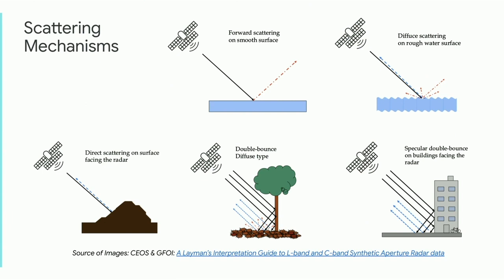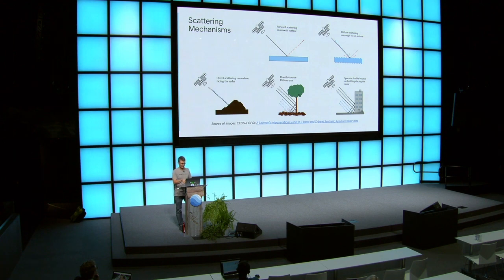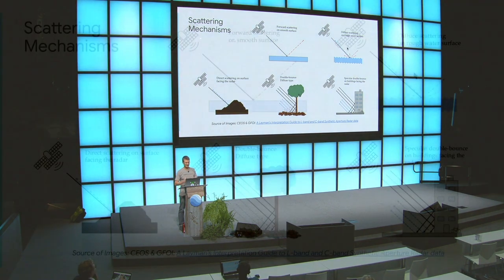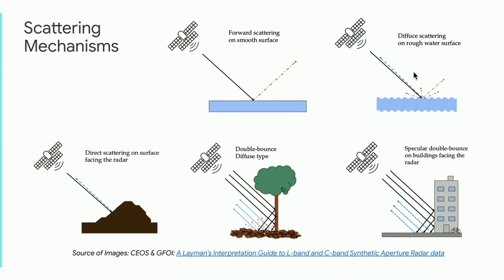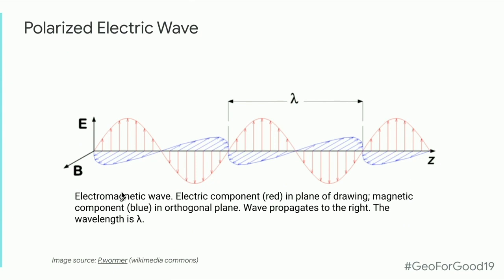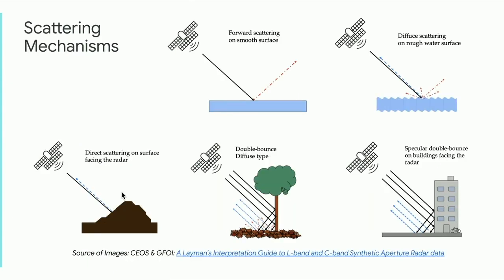There are different mechanisms that scatter the signal back. A forward-scattering flat surface like calm water will not reflect much back to the satellite, so water tends to be dark in backscatter imagery unless there are waves. If there are waves, the angle might reflect some signal back toward the source. For terrain, if the angle of the terrain is facing the satellite sensor, you get a bright return; if facing away, you might get no return at all — it could be in the sensor's shadow.